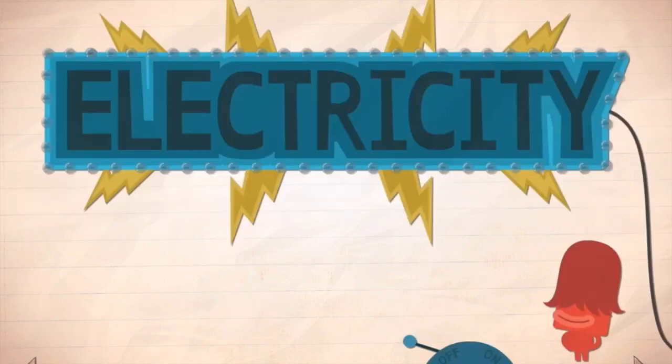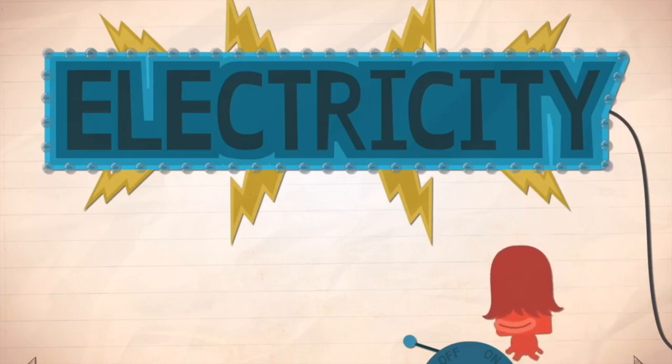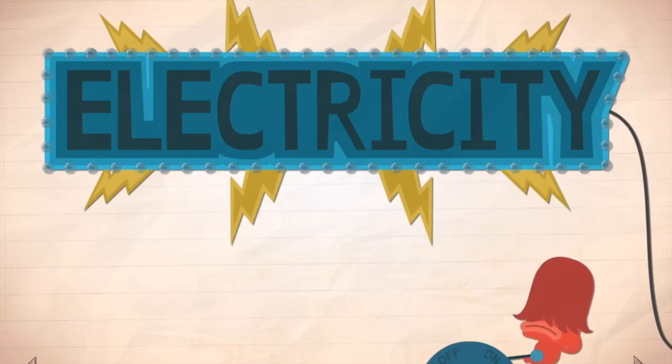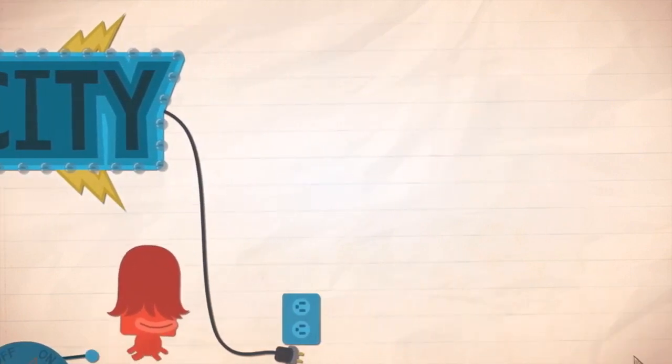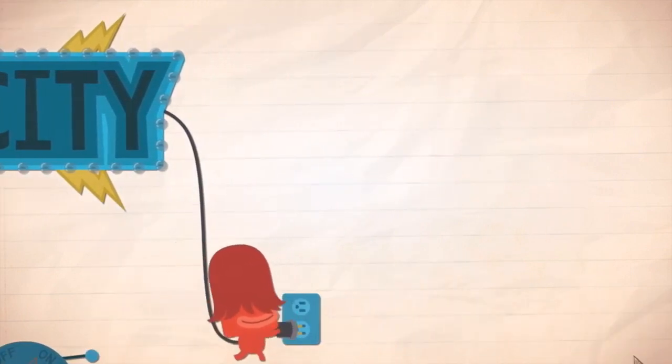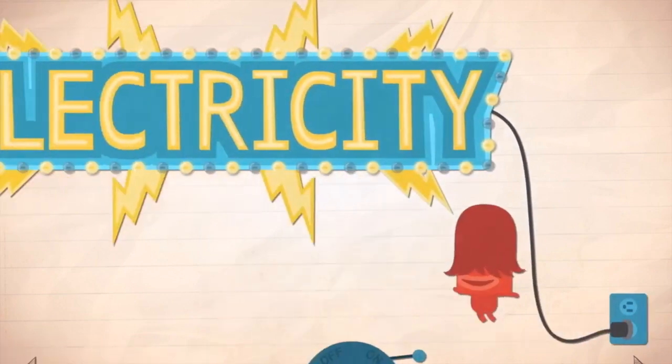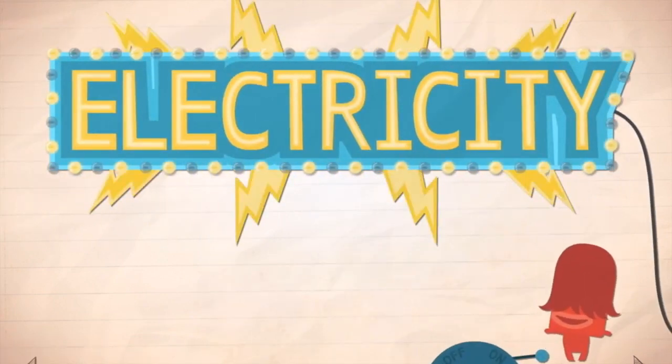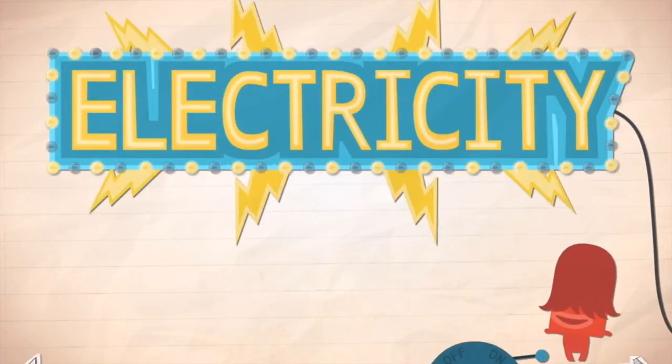Electricity. Electricity is a type of energy that moves through wires and is used to power lights, TVs, toasters, and even certain cars.